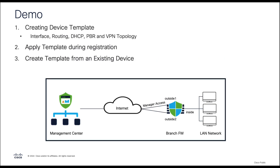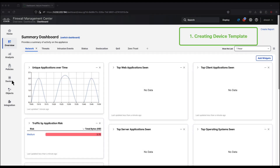In this demo we'll use a branch firewall which is dual ISP and is managed through the data interface on outside one. We'll start with creating the device template, which includes defining the interfaces, routing configuration, DHCP configuration for the LAN network pool, policy-based routing for direct internet access, and VPN topology for branch-to-hub communication. The second step is applying the template during registration, and lastly we'll create a template from an existing device.